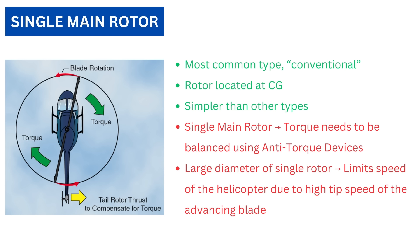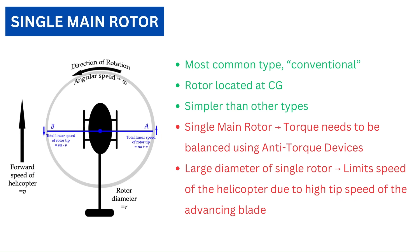The application of power to the single main rotor will cause a strong torque that must be countered in some way. We will discuss these methods later in the video. The large diameter of the single rotor is a problem for high-speed flight because it causes the advancing tip to have a higher relative velocity and will reach Mach effect sooner.